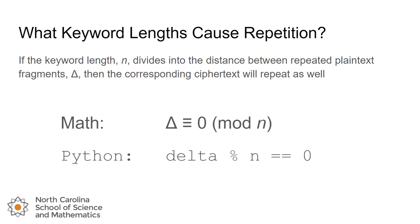It turns out the result is that if you have your keyword of a given length we'll call that n. If that n divides into the distance between the repeated plaintext fragments which we'll call delta, then the corresponding ciphertext is going to repeat as well. So a couple ways we could think about that. If you want the math way we could say that delta, the distance between the plaintext fragments, is congruent to zero when we're working in the modulus of n. If you're more program or Python minded we could say that if the delta mod by n is equal to zero then that means you're going to get the repetition in the ciphertext.